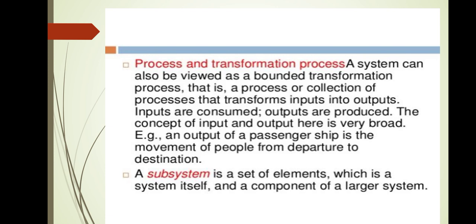Process and transformation process: a system can also be viewed as a bounded transformation process — a process or collection of processes that transforms inputs into outputs. Inputs are mostly consumed; outputs are produced or processed. The concept of input and output here is very broad. For example, an output of a passenger ship is the movement of people from one place to another, from departure to destination. A subsystem is a set of elements which is itself a system and a component of a larger system.